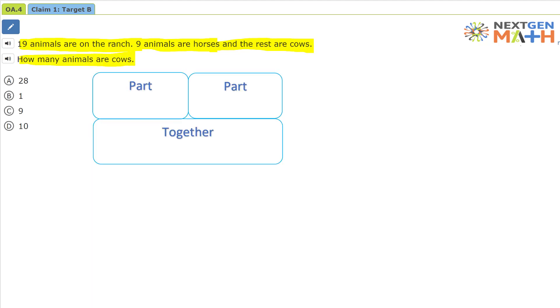Well let's use this part-part-together organizer to help solve the problem. We're going to re-read the problem and fill in the graphic organizer. Nineteen animals are on the ranch. That's all the animals together. So we have nineteen animals.